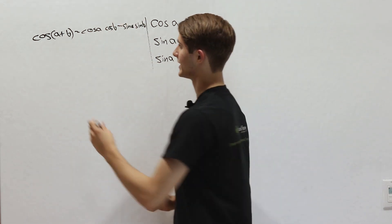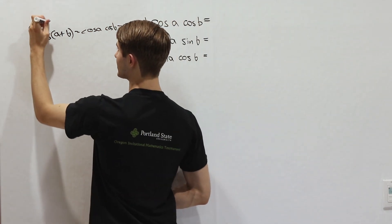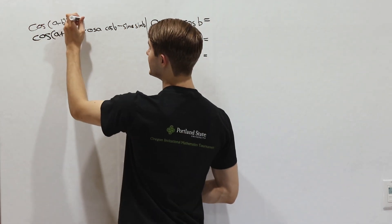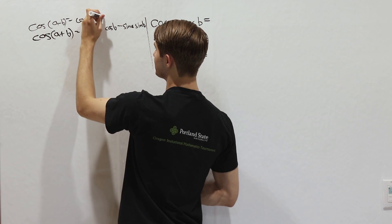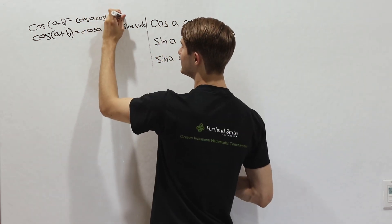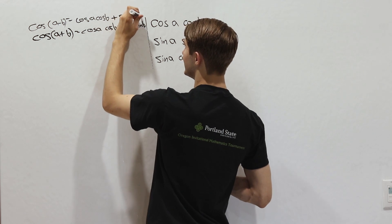Now what we're also going to look at is what happens when we take the cosine of a minus b. In this case, we're going to get cosine a cosine b like before, but then instead of a minus, we're going to get a plus sine a sine b.